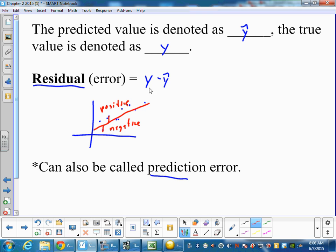So if you're confused on whether it's y hat minus y or y minus y hat, just think about is our point above or below our line, and that can help you figure it out.